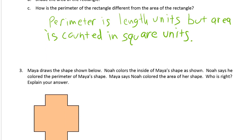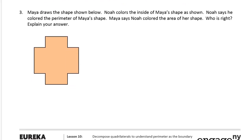Maya draws the same shape shown below. Noah colors the inside of Maya's shape as shown. Noah says he colored the perimeter of Maya's shape. Maya says Noah colored the area of her shape. Who is right? Explain your answer. So Noah colors the inside of the shape. So who is right?